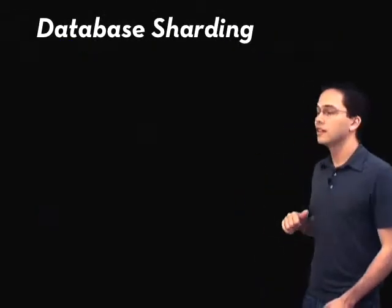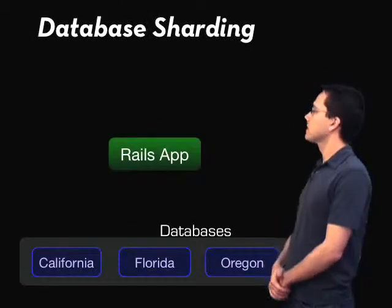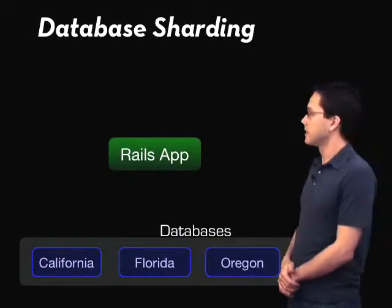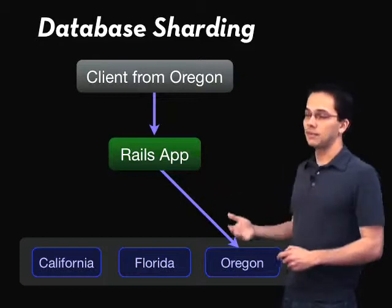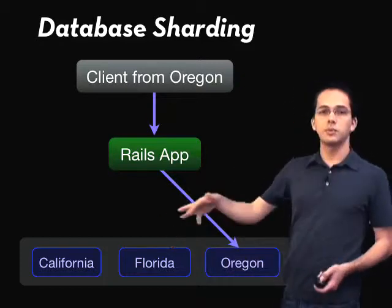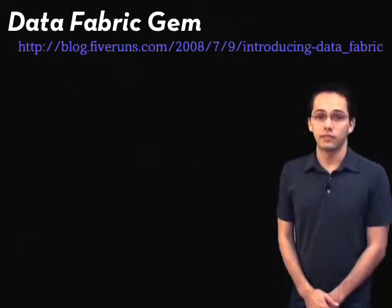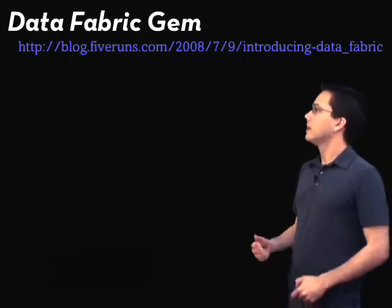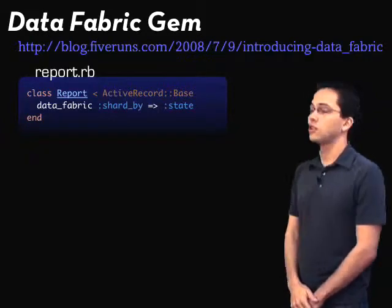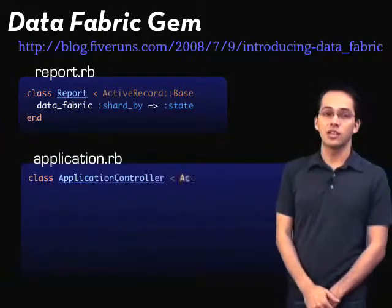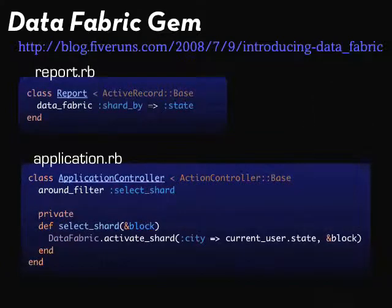Next up, Taylor mentioned database sharding. So what does that look like? One way we could shard our databases is to have a California database, a Florida database, and an Oregon database. If a client from Oregon comes in, our Rails app goes: he's from Oregon, so all of his queries go to the Oregon database. For doing database sharding in Rails, we can use the data_fabric gem. We might have a Report model with data_fabric shard_by: :state. Then in application.rb, when any page is loaded, we basically select which database to use by calling activate_shard with the city derived from the current user's state.